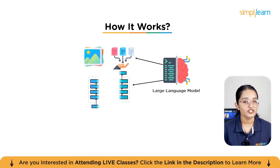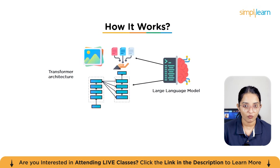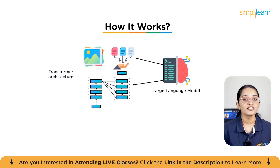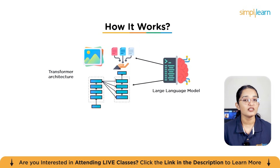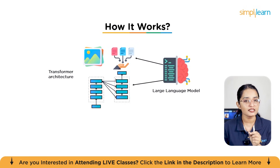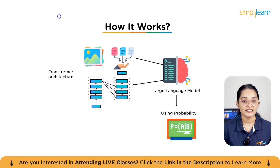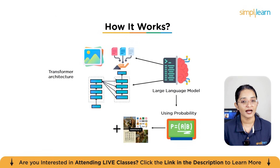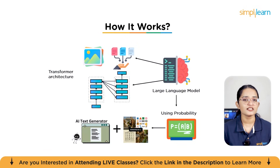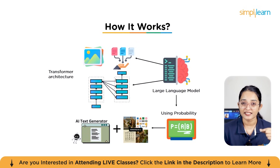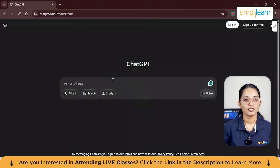Now let's talk about how it works — the model structure. The heart of generative AI is something called a large language model, or LLM. This is like the brain of the system. It's trained on billions of words from books, Wikipedia, and online articles, so it understands how language works. The model uses something called transformer architecture, which breaks down text into smaller units called tokens and learns the relationships between them. Using probability, it can predict the next word, sentence, or even image pixel based on patterns it has seen before. In simple words, it's a super-powered autocomplete that can generate entire essays, code snippets, or even pictures.